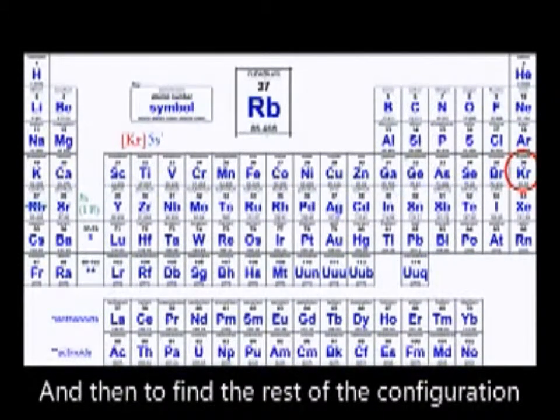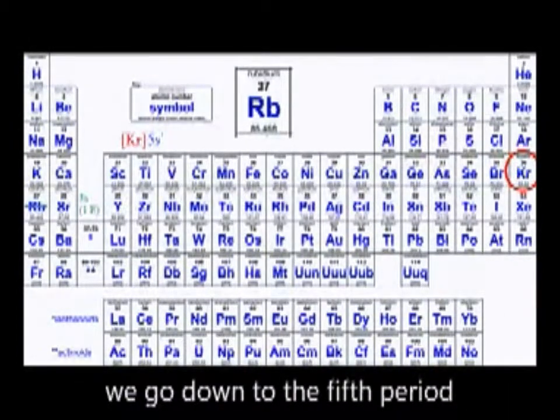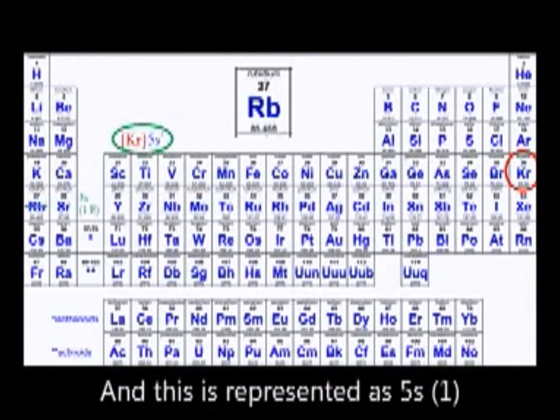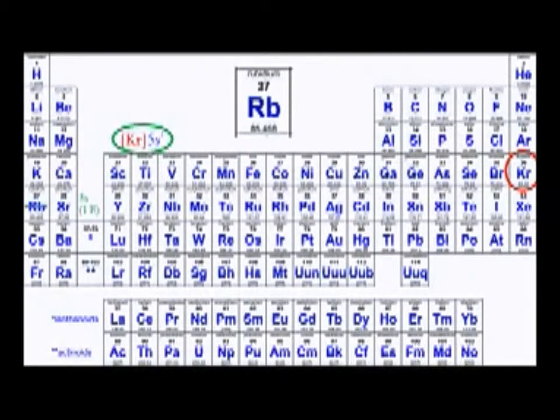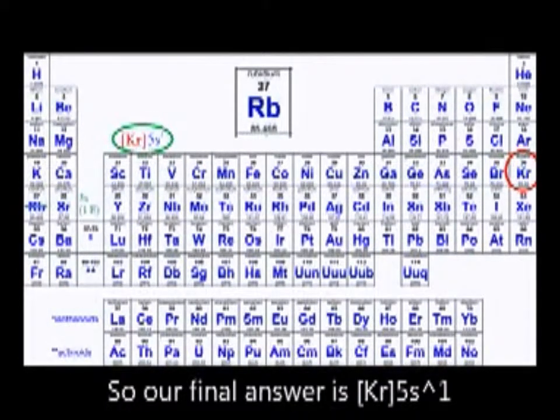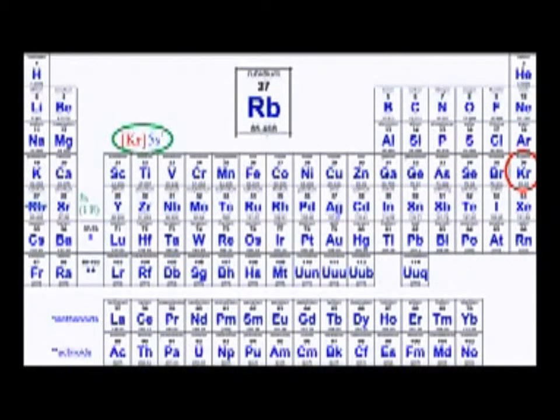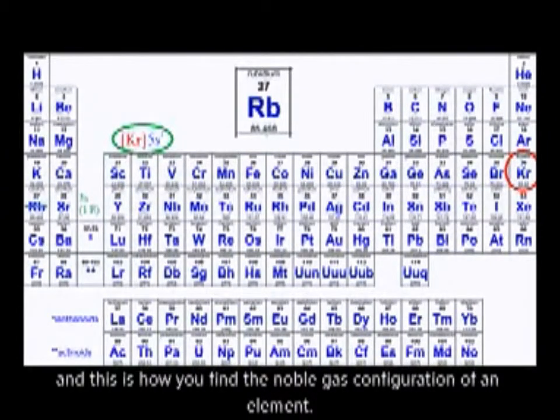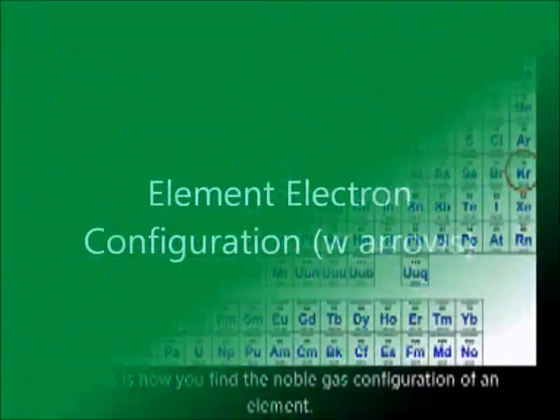And then to find the rest of the configuration, we go down to the fifth period, and this is represented as 5s1. So our final answer is krypton 5s1. And this is how you find the noble gas configuration.